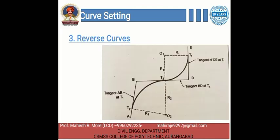The next one is the reverse curve. A curve which consists of two simple curves having equal or different radii turning in opposite directions is called a reverse curve. For better understanding, we can see the figure. The two centers of the curve are on opposite sides of a common tangent BD. Reverse curves are necessary on hill roads where frequent changes in the direction of travel are required. They are also necessary for crossovers in a station yard and in the alignment of railway track in a hilly area.